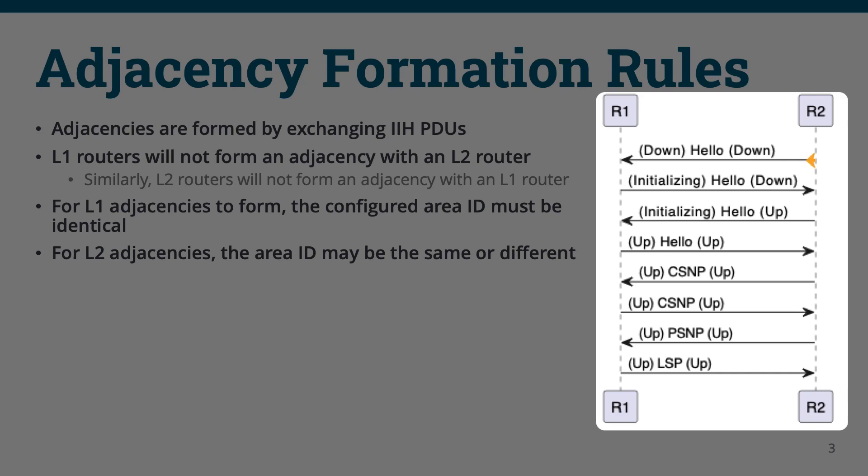The first step is R2's IIH PDU is sent out and received by R1. When R1 receives the PDU, it recognizes that this is from a new neighbor. It will check the list of neighbors that R2 is aware of and will not see its own identifier, so it will create a neighbor relationship and show R2's neighbor state to be initializing.